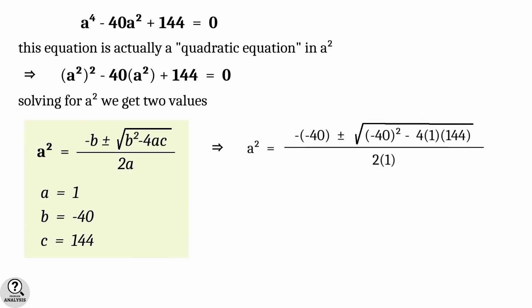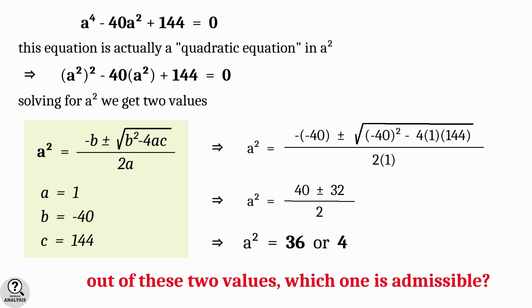On substitution and simplification, we will get two possible values for a². They are 36 and 4. But in this context, can you say which one is admissible?